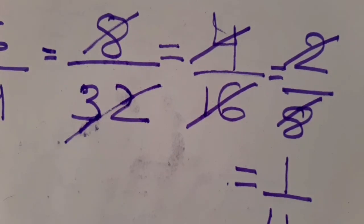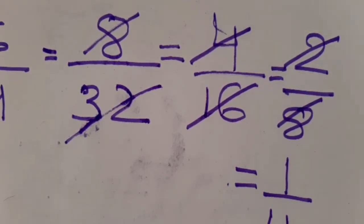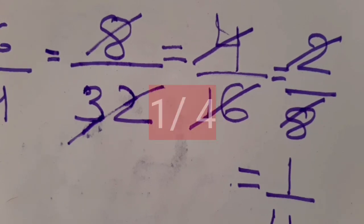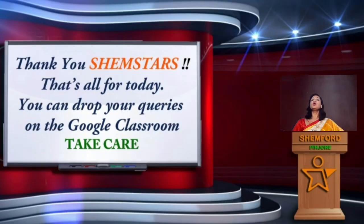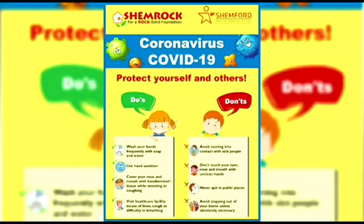I have to proceed this process unless both the numbers become co-prime — that is, no common factor will be there between them. So then I will stop. Here my answer is 1 upon 4. Now complete activity 3. Thank you, Chemstars. That's all for today. You can drop your queries on Google Classroom.